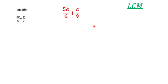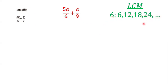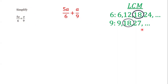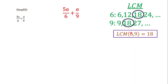We're going to find the LCM of 6 and 9. The multiples of 6 are 6, 12, 18, 24, and so on. The multiples of 9 are 9, 18, 27, and so on. So the lowest common multiple of 6 and 9 is 18.